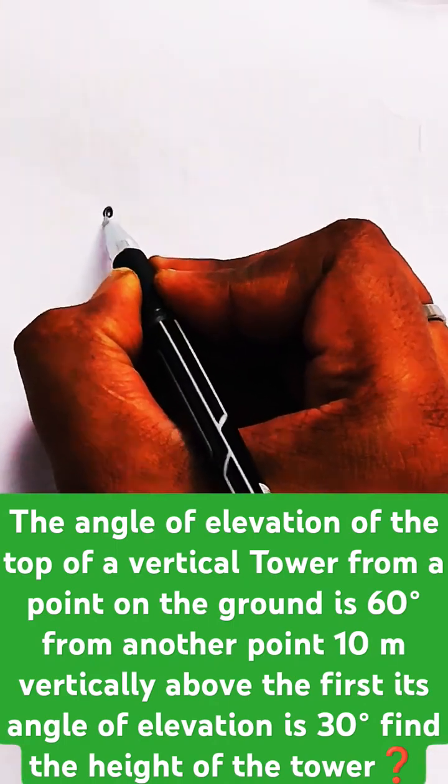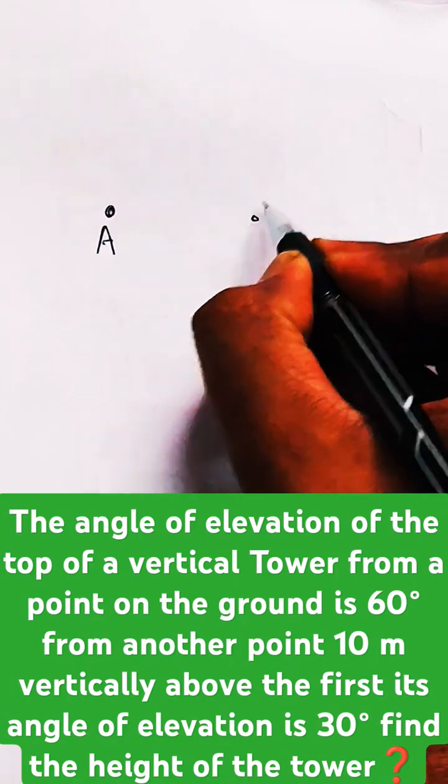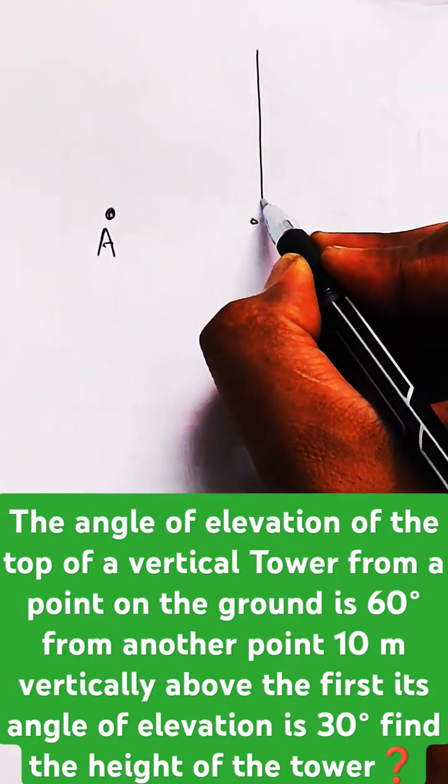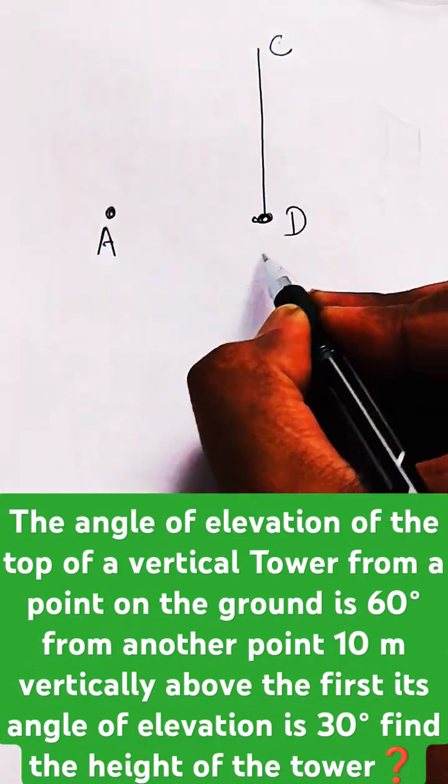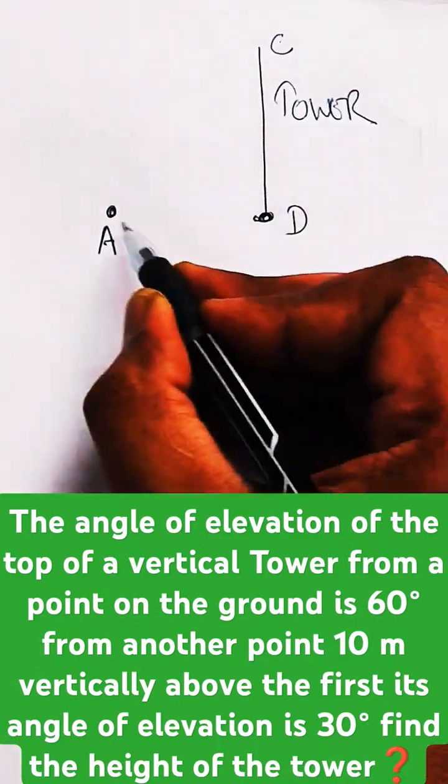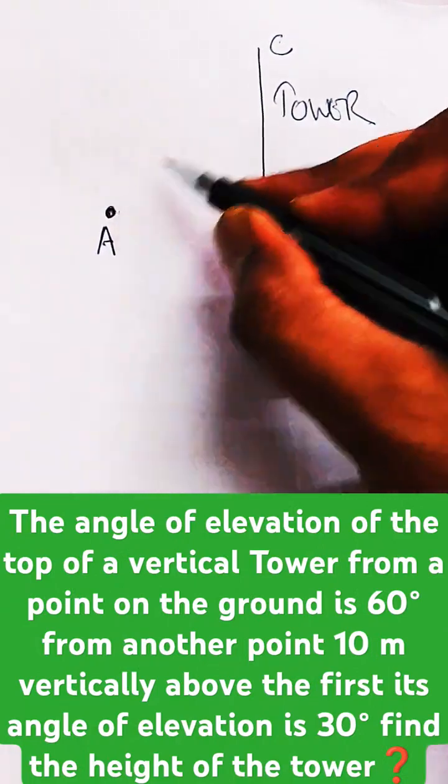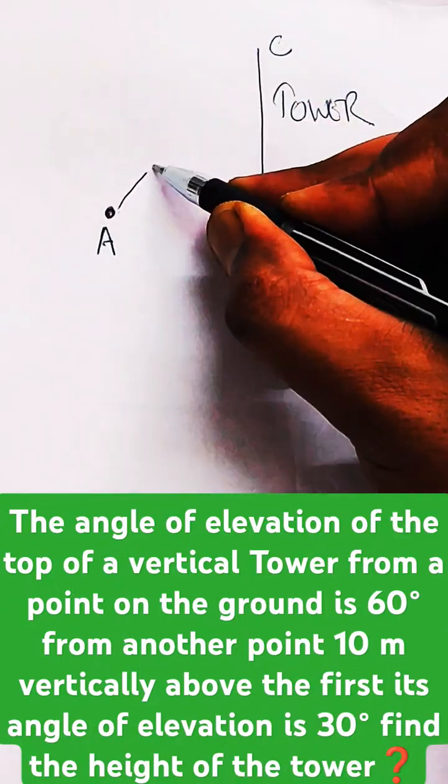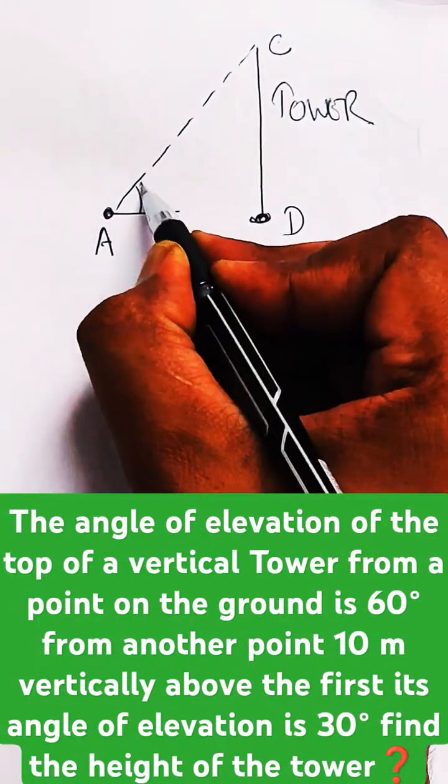This is a point on the ground. From here, the angle of elevation of a tower—if this is the tower, let's say C and D, this is the tower—the angle of elevation from the point on the ground to the top of the tower will be this one, and this is given to you as 60 degrees.